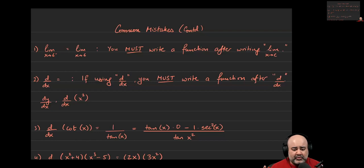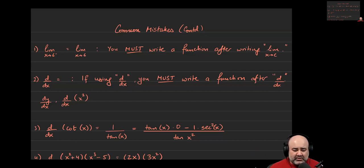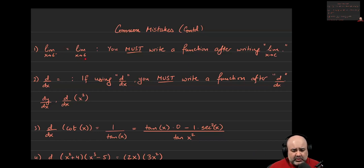If the question says let f of x equal x squared plus 5x, find the limit of that function as x approaches 3, then you can write f of x. Alternatively, you can create a label yourself — you can start by saying let f of x or let y equal x squared plus 5x, and then you can use it. But you cannot just assume that the function you're given is f of x or g of x. Please make sure that anytime you write limit notation, you must follow it up with a function.